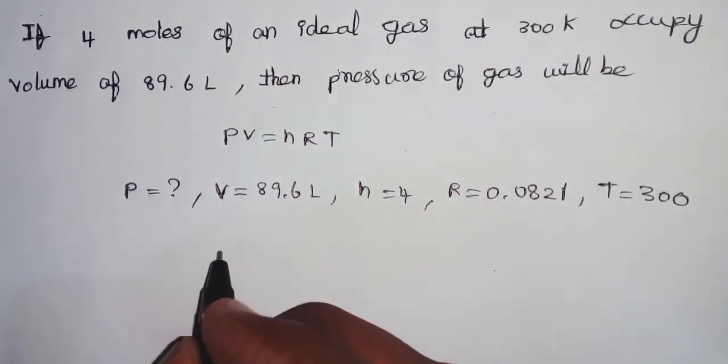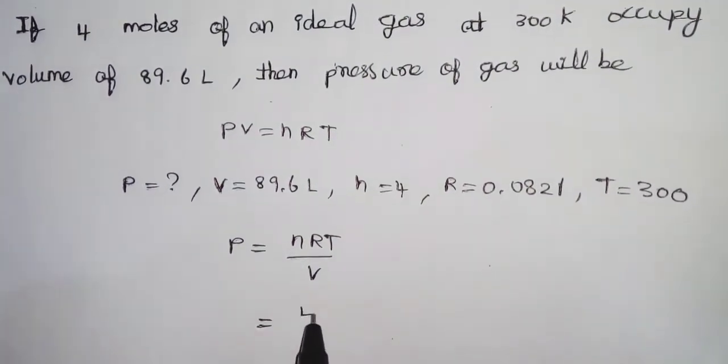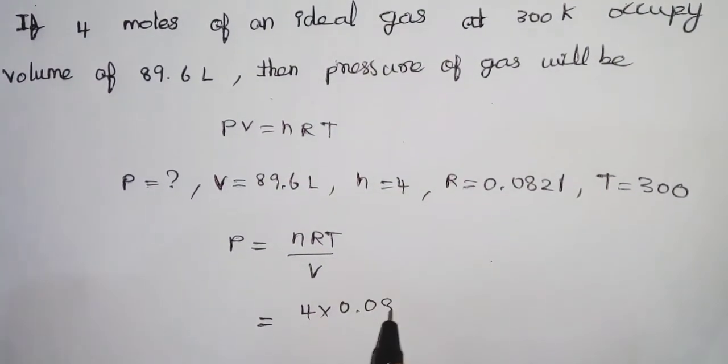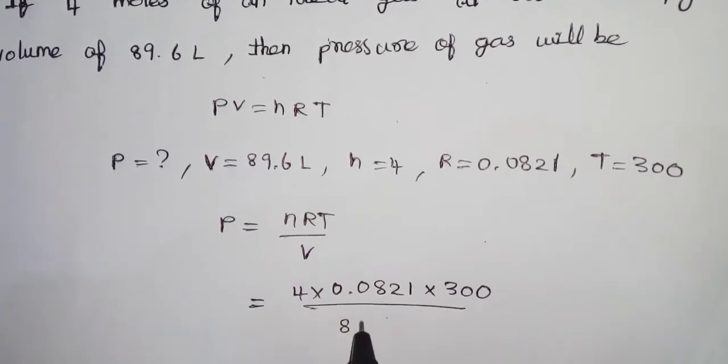To find pressure, P equals nRT divided by V. So P equals 4 times 0.0821 times 300, divided by 89.6 liters.